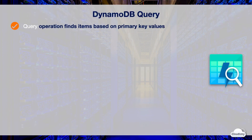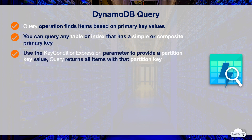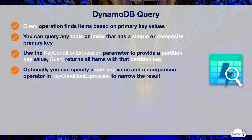You can query a table or a secondary index with the primary key. The query operation finds matching items based on the primary key values. You can query any table or secondary index that has a simple or composite primary key. For a query operation, you need to use the key condition expression parameter in the query statement to provide a partition key. Query returns all items with the given partition key.